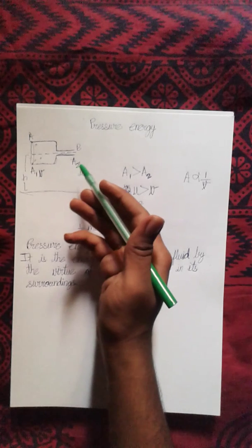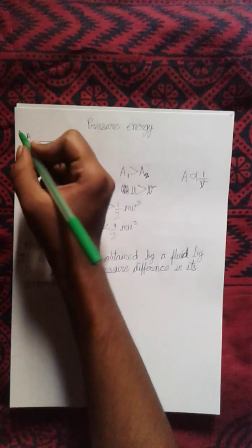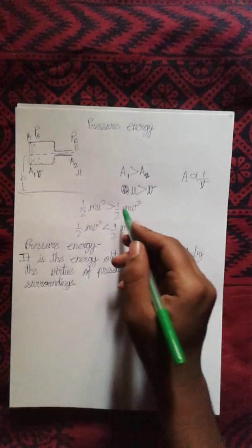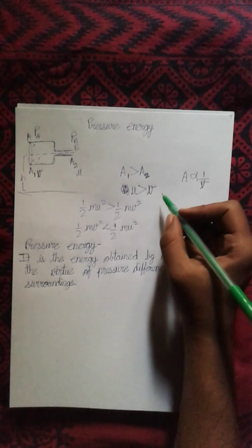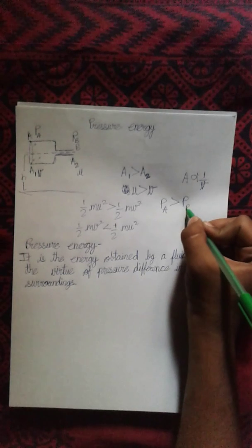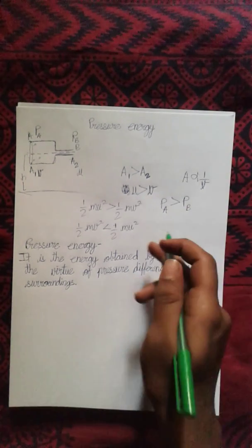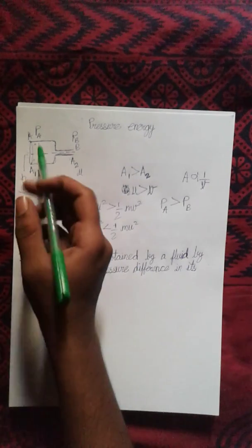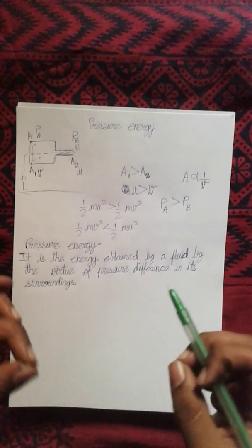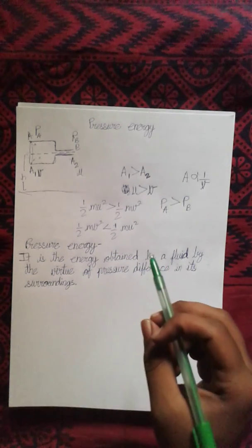Well, here we can see pressure at point B is PB, pressure at point A is PA. So as u is greater than v, we can simply state PA is greater than PB. So here we can easily tell that there is a difference in pressure energy due to the pressure difference in its surroundings. So yeah, this is the simple idea behind the concept of pressure energy. Thank you.